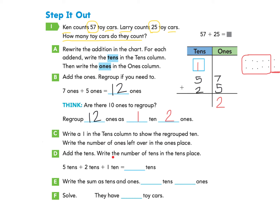Let's look at part D. Add the tens. Write the number of tens in the tens place. We have 3 numbers here. We have 1, 5, and 2. So we have 5 tens, 2 tens, and 1 ten. So we're going to add all 3 of these numbers together. When we add 5 plus 2, I know that that's 7. And then I add 1 more to 7, and that makes 8. So I have made 8 tens. And now I'm going to write that in the tens column right here.